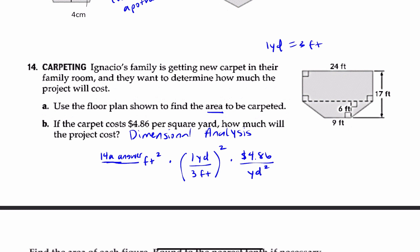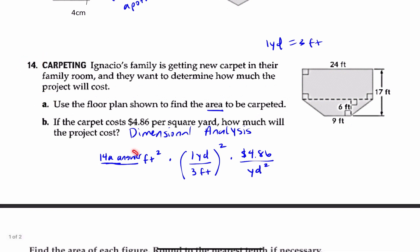Once you find 14A, let's take a look at 14B. If the carpet costs $4.86 per square yard, how much will the project cost? Now, let me warn you. This problem is a dimensional analysis problem. And I already set it up for you so you can answer this question. Once you get 14A, you're going to put the answer here, feet squared. And then you're going to multiply that by this times this. Because note that this is in feet. This is saying $4.86 per square yard. So we are dealing with two different units here.